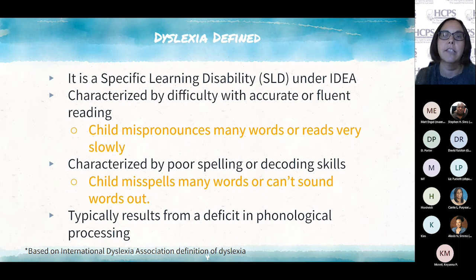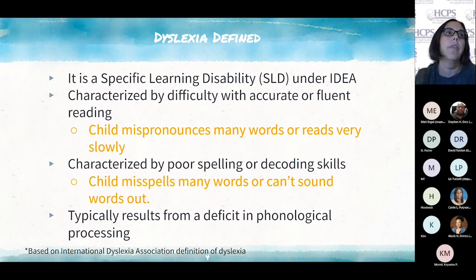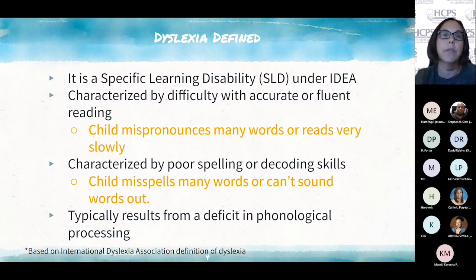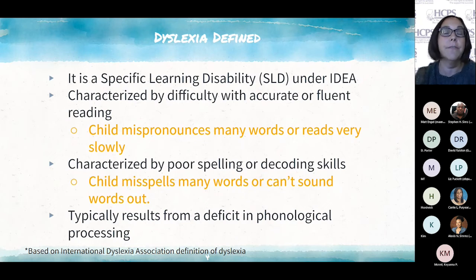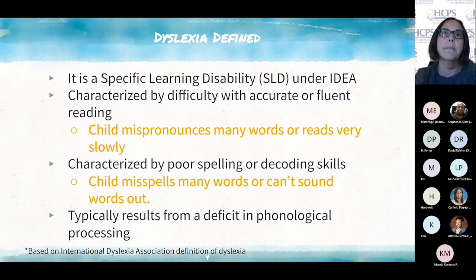A child with dyslexia may be stopping every three or four words to try to figure out how to spell a word. As you might imagine, that really impacts their ability to communicate with written language and their written expression, which can have a huge impact on their success. They may also struggle with sounding out words — when they come to an unfamiliar word, they may not have the skills to sound it out, and instead are left guessing or looking to an adult for help. Of course, these characteristics alone don't identify a student with dyslexia; that requires professional assessments from a psychologist.